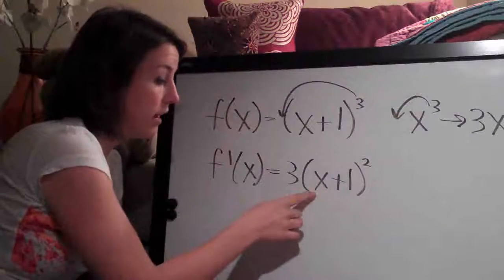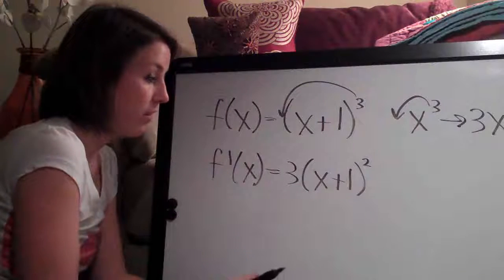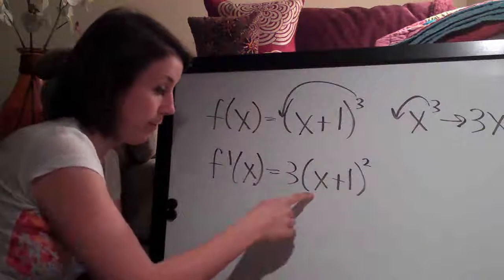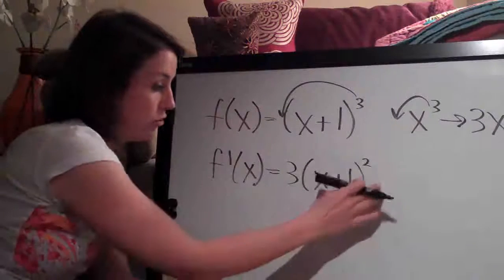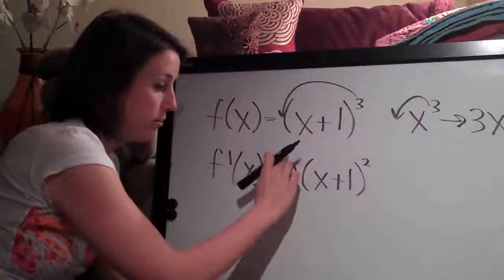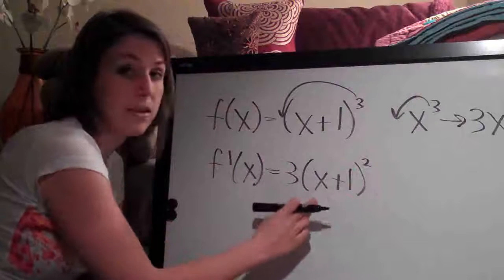We have to deal with the inside and make sure that we've covered all of our bases. So that's where chain rule comes in. Chain rule says do the part on the outside, bring the 3 over, make this a 2, but then deal with the inside.